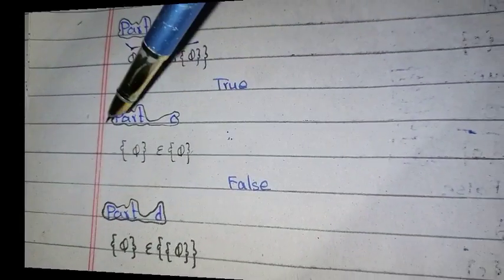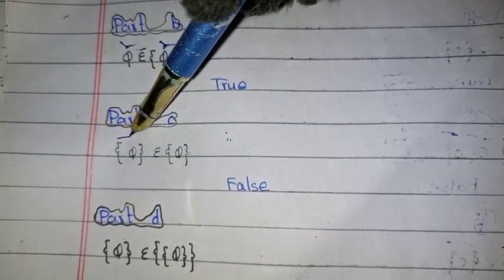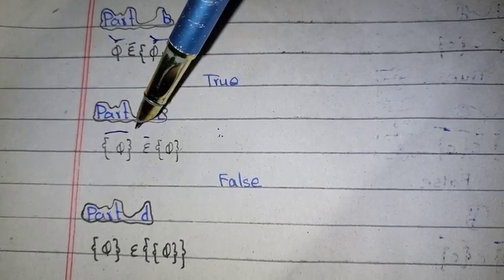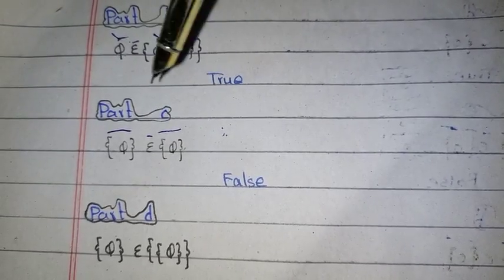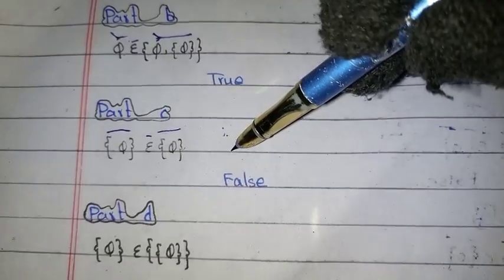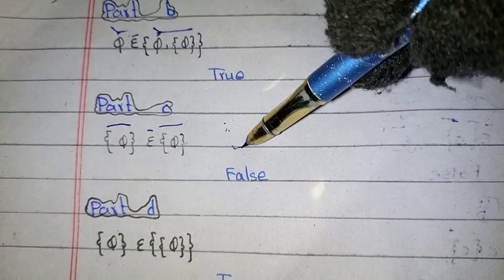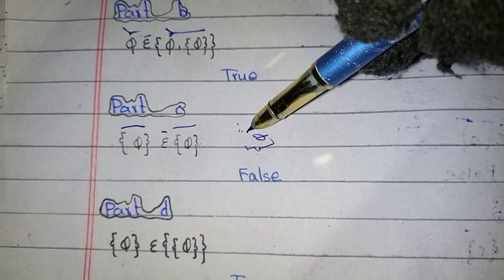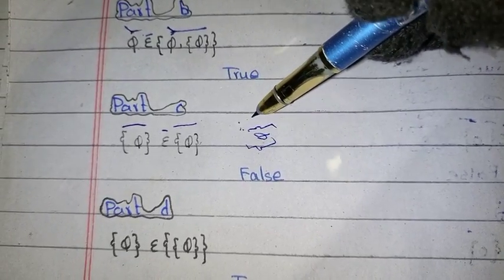Part C: this element is an element of this set. That is a false statement. But if we have this thing written in this form, then it is true.